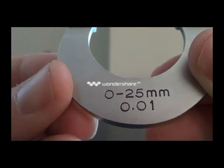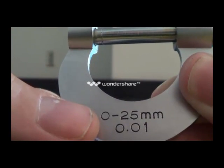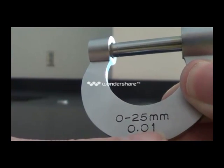Now, take a look here. This tells you how accurate it can measure. This says it can measure things between 0 and 25 millimeters, but it can do so at an accuracy of 0.01 millimeters.